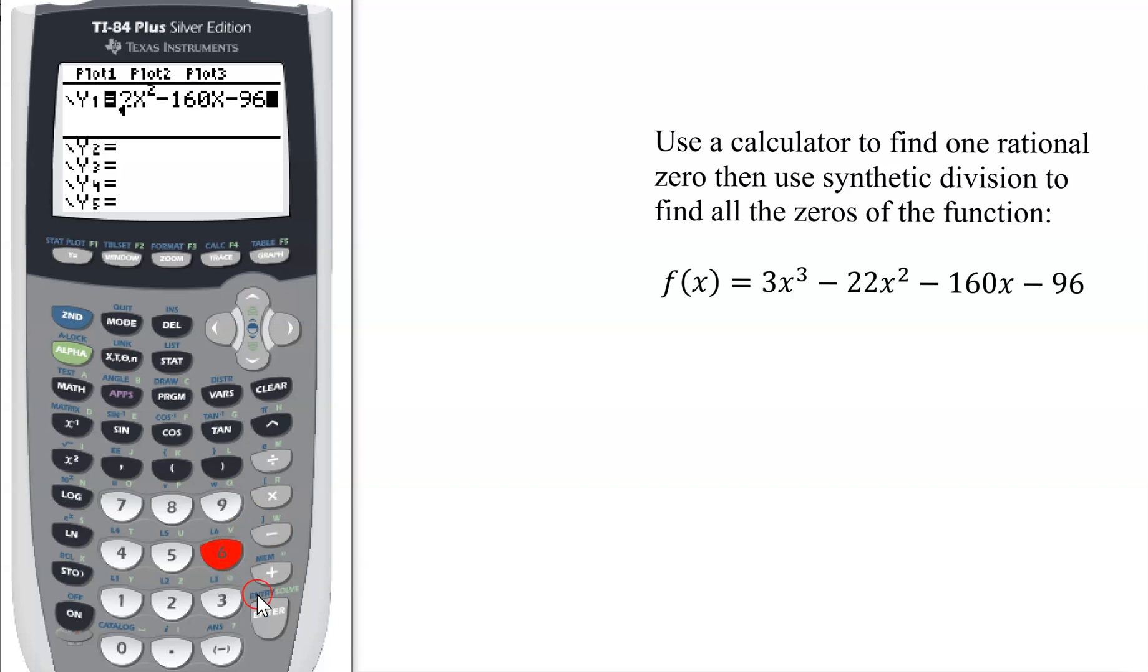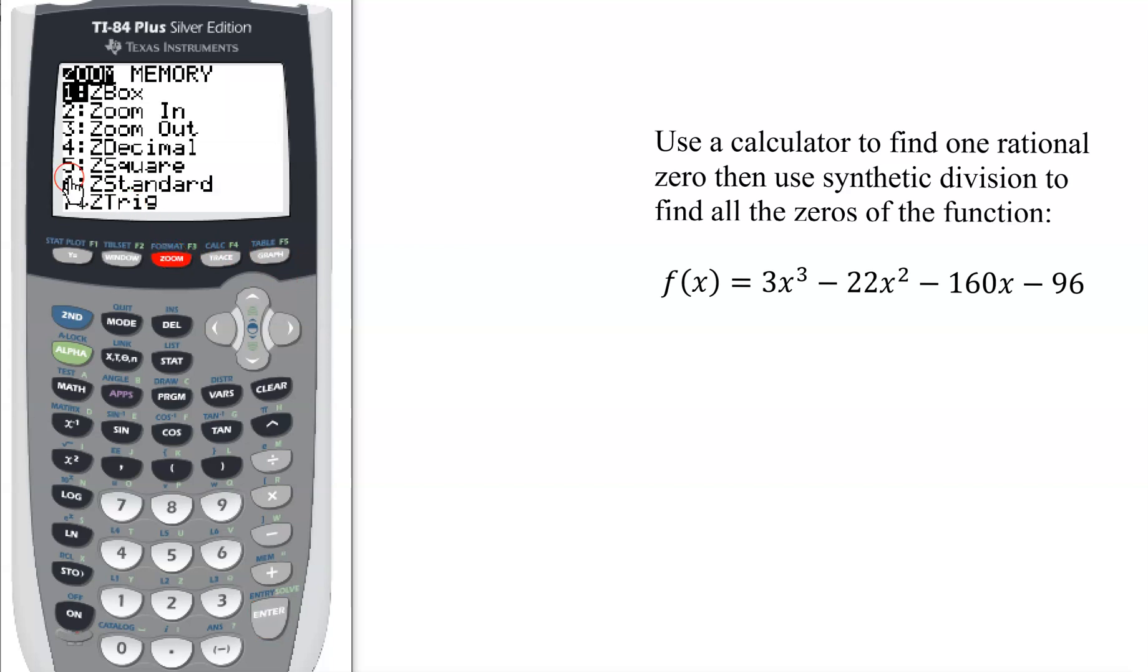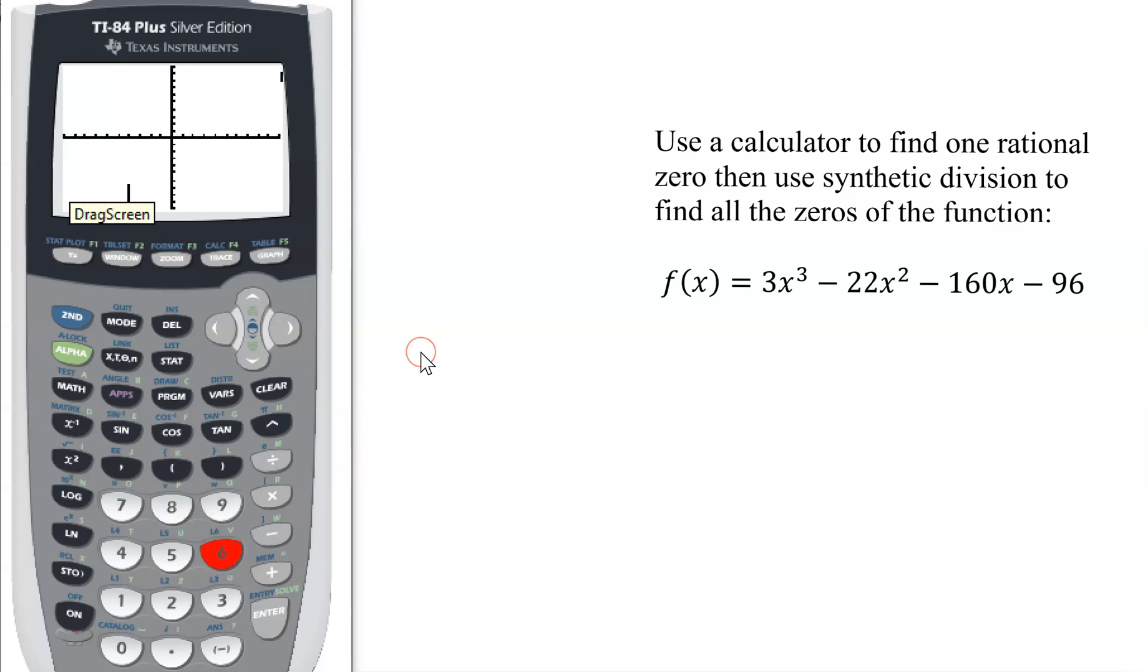Minus 160x minus 96. So there is my function. And I hit enter. Does it look correct? 3x cubed minus 22x squared minus 160x minus 96. Let's just arrow over just to make sure I typed it correctly. Yes, that looks correct. So I'm happy with my function. And now I need to hit the zoom key to start with. We always want to start on zoom standard, which is 6. And there is my graph.